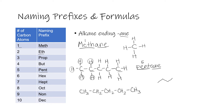You can also draw pentane as a line angle formula. At every point in the zigzag there is a carbon — one, two, three, four, five. There are also understood hydrogens to give each carbon a total of four bonds. Carbon has a tetrahedral arrangement around it when it has four single bonds, which is why chains of hydrocarbons have that zigzag structure and why the line angle is drawn that way.